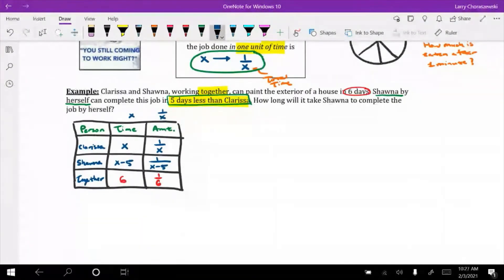So what that means is that the amount done after one day by Shawna would be given by the expression one over x minus five. Is this all making sense so far?